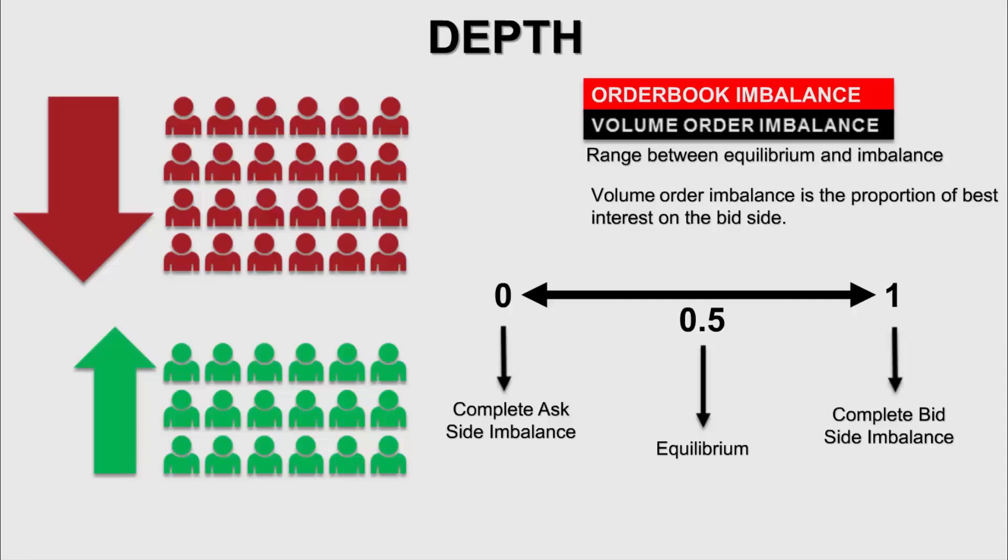The same is true for the inverse situation where the value reaches 1. At that point, you have absolute bid side dominion and, of course, no market.